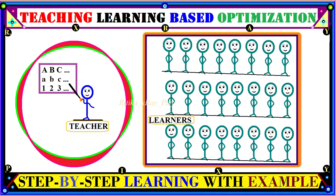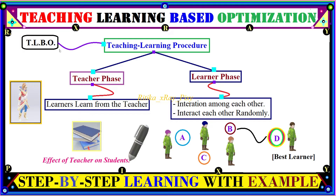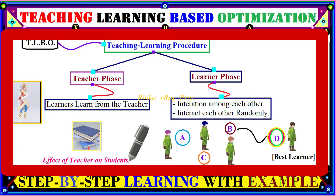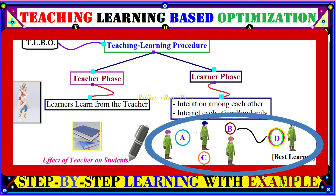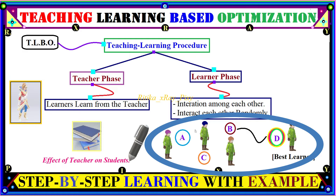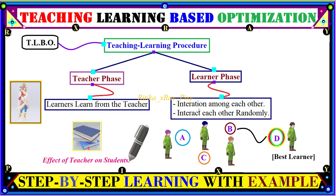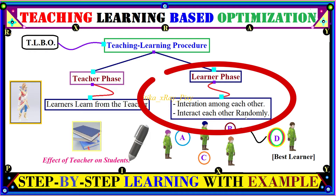As this algorithm is inspired by the teaching learning procedure in real life, we will first try to understand that procedure. In the teacher phase, learners learn from the teacher and we note the effect of a teacher on the students. In the learner phase, learners can interact with each other or even move randomly — just as in real life we can randomly select a person having more knowledge in order to enhance our own.